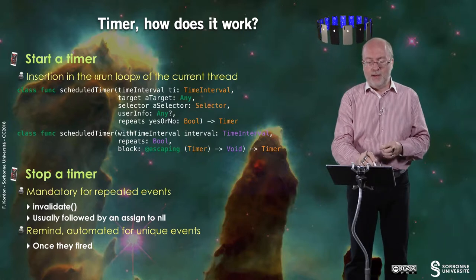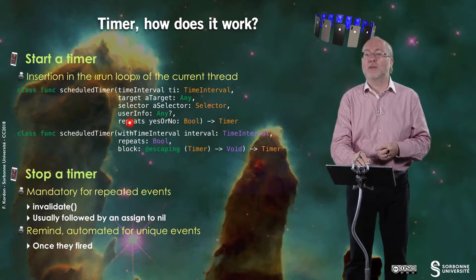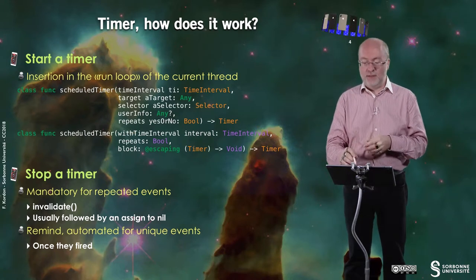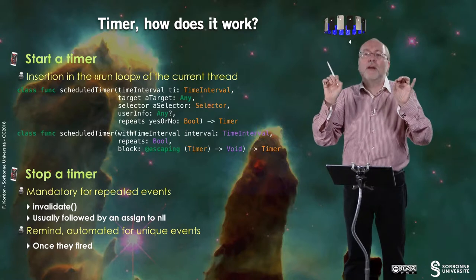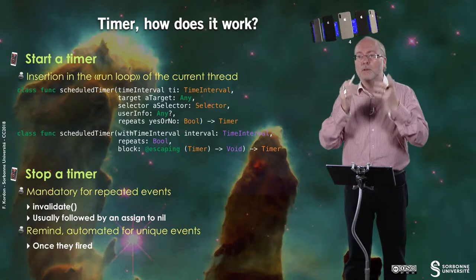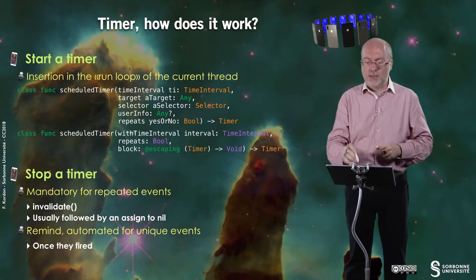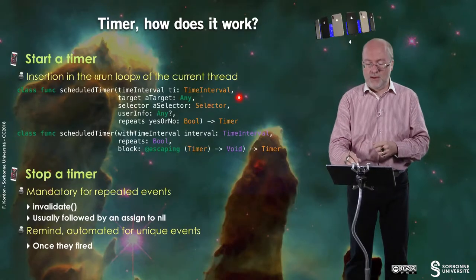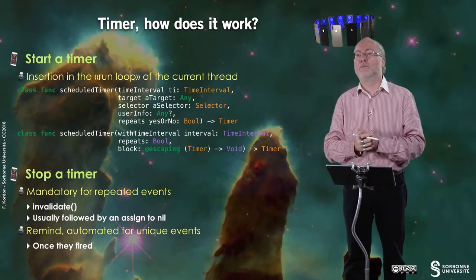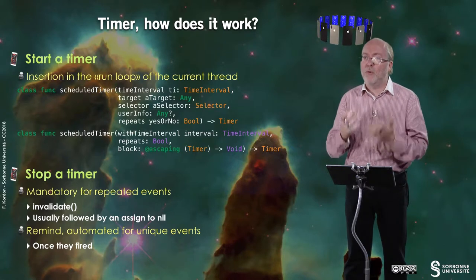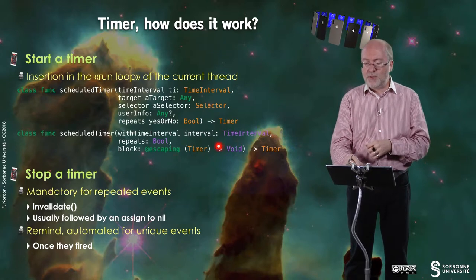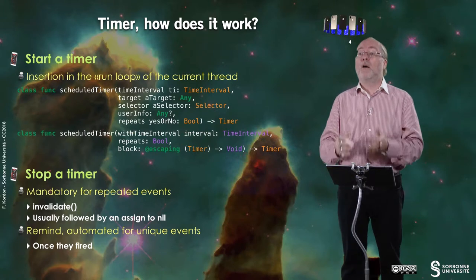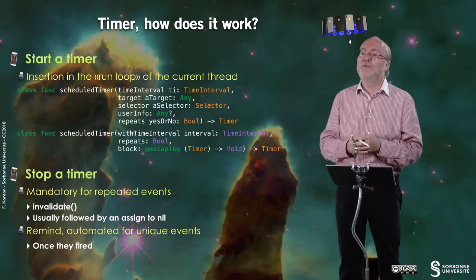I have two methods. The first method is scheduleTimer with a given set of parameters, and the second one has another set of parameters. In the first one, I'm using the traditional target approach, which is a reference to an object, an association to a selector, and then you can pass some other information, along with your time interval, and you set whether you want to repeat the event or trigger it just once. The second method differs in that you directly provide a reference to a function having this profile, or you put it inline when you invoke the timer.